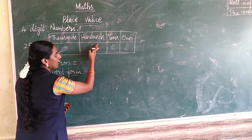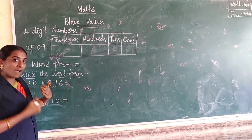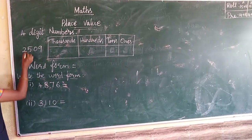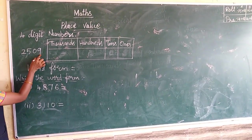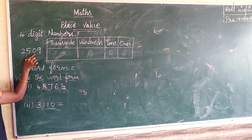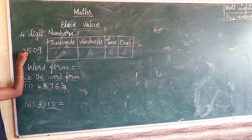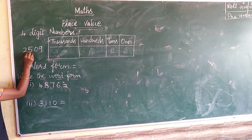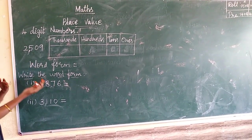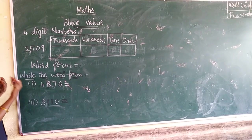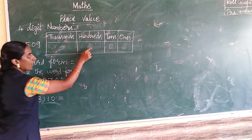After every 3 digits from the right, we use a comma. Count the place value: 1s, 10s, 100 — then use the comma. After 3 digits, use the comma.